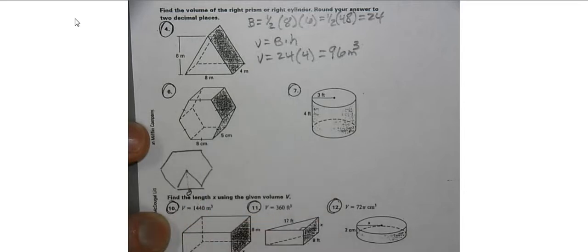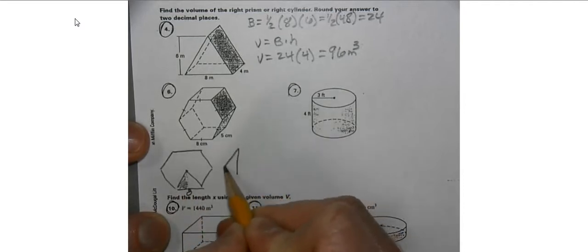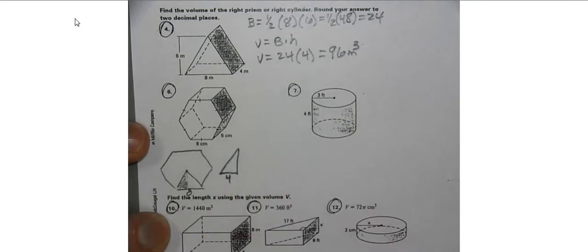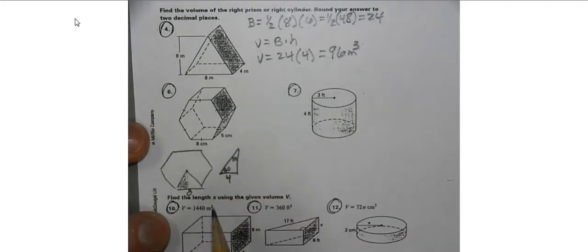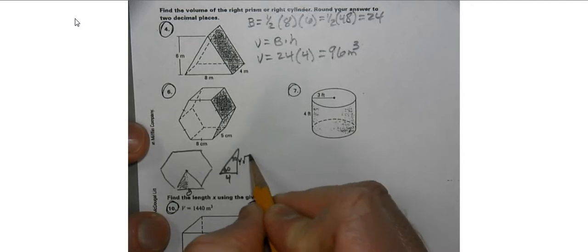Next, we have a hexagon. We're going to break this down into triangles. We know that this length is 8; we've done this several times throughout this unit. When we break this hexagon up, we have a triangle that has a short side of 4. It's a 30-60-90 triangle — anytime you have a hexagon, you can break it into 30-60-90 triangles. So the long leg is 4 root 3.